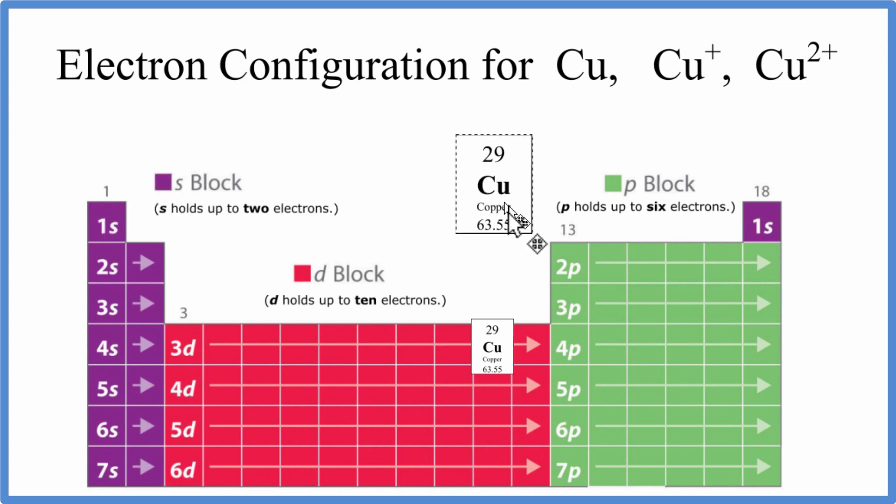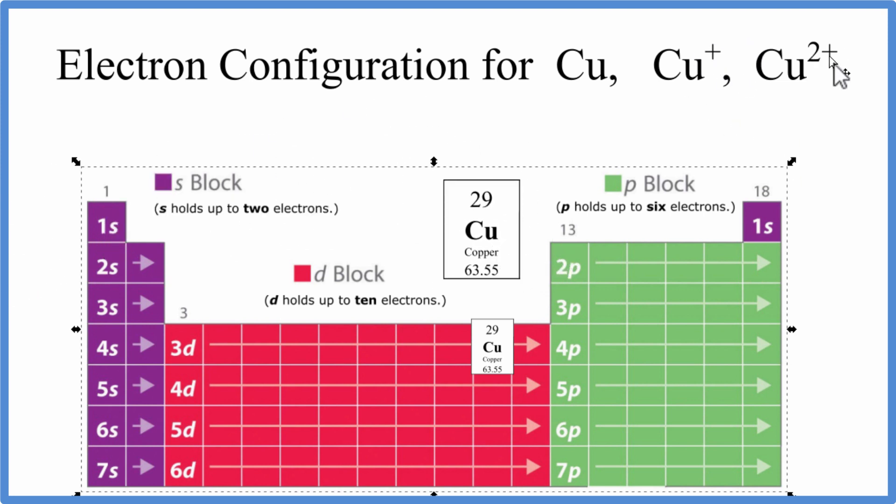So for copper, the neutral element, that means it doesn't have the pluses after it. Copper on the periodic table has 29 protons. This is the atomic number. It equals protons. Because it's neutral, we have 29 electrons.